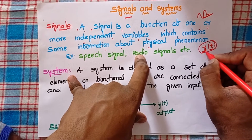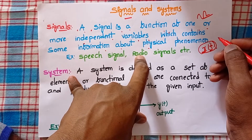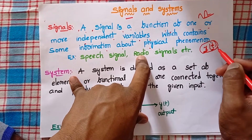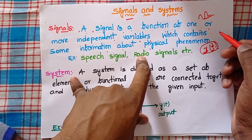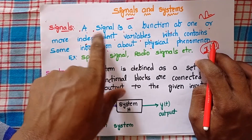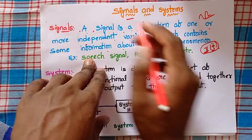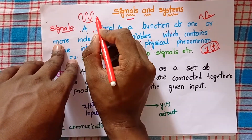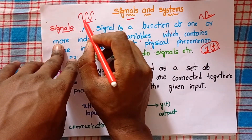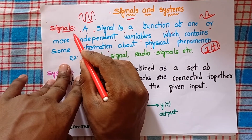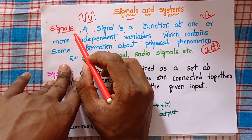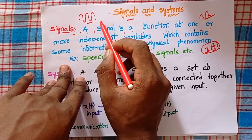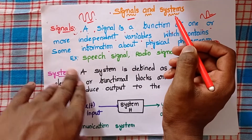A signal is represented like x of t, or y of t, or x of f, where t and f are independent variables. It can contain more than one independent variable. The main use of a signal is to carry information — it is used to transfer information about a physical phenomenon from one place to another place.